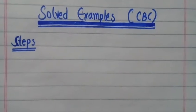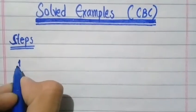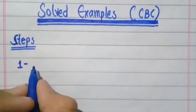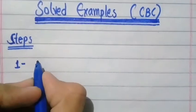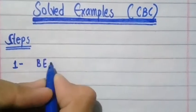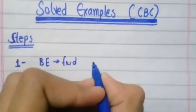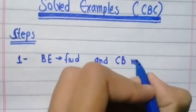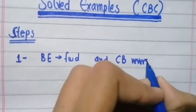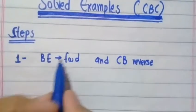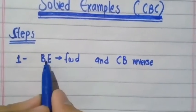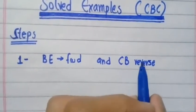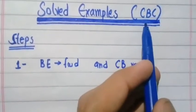The first step to solve examples of common base configuration is to check whether the transistor is working or not. A transistor works when its base-emitter junction is forward biased and the collector-base junction is reverse biased. So first you have to verify that the base-emitter junction is forward biased and the collector-base junction is reverse biased.